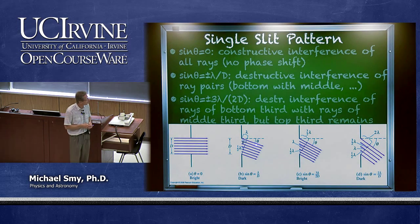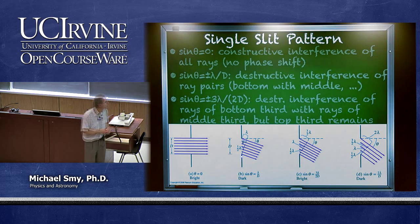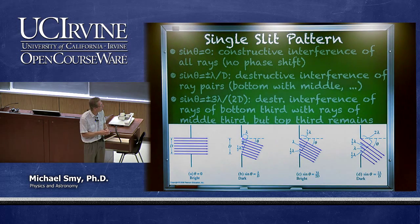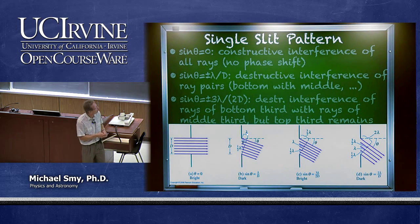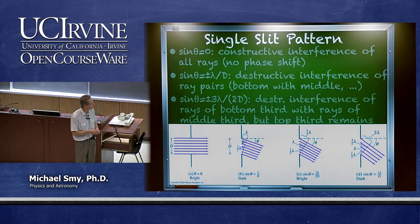However, if we look at an angle with respect to the primary beam, there is a phase shift between the Huygens waves because one ray has to travel an extra path. If that extra path is one wavelength, then in the center it is half a wavelength, and therefore this ray destructively interferes with that ray.